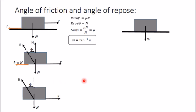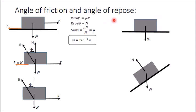Now the second concept is angle of repose. Suppose the same block is placed on a horizontal plane with weight W. If I fix one end of this plane and lift the other end, after lifting to some angle the block will start to slide downward because of its own weight. The angle at which this block just starts to move downward is called the angle of repose. So when I tilt this plane by an angle θ, the block is just about to slide downward, and this angle θ is called the angle of repose.